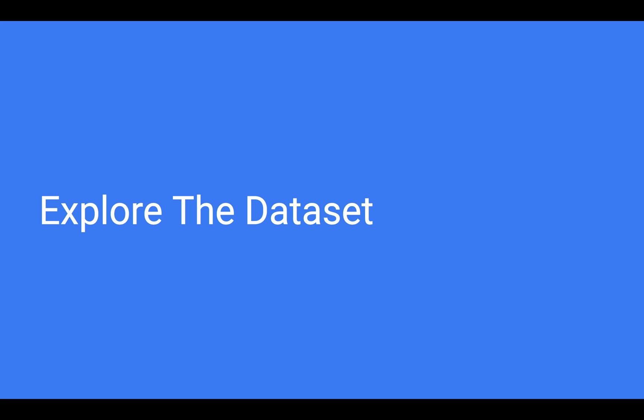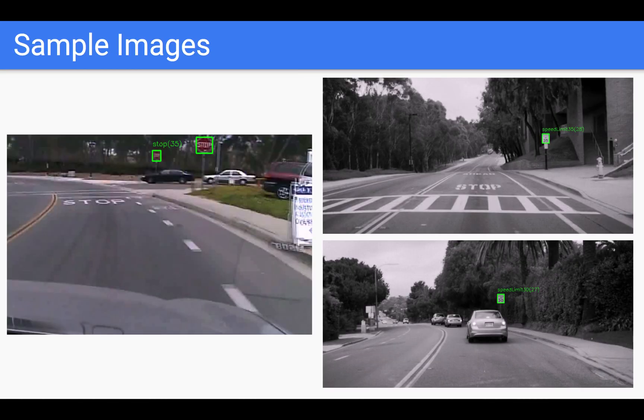Let's go ahead and quickly explore the dataset. Here's a few sample images of what you will see from LISA. On the left-hand side, you see stop signs. Right-hand side here, you see the speed limit 35 and 30, respectively.